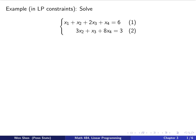We are going to look at this example. So let's say this is a constraint of a linear programming problem. The first constraint is x1 plus x2 plus 2x3 plus x4 equals 6 — this is equation 1. And the second one is 3x2 plus x3 plus 8x4 equals 3 — that's equation 2.